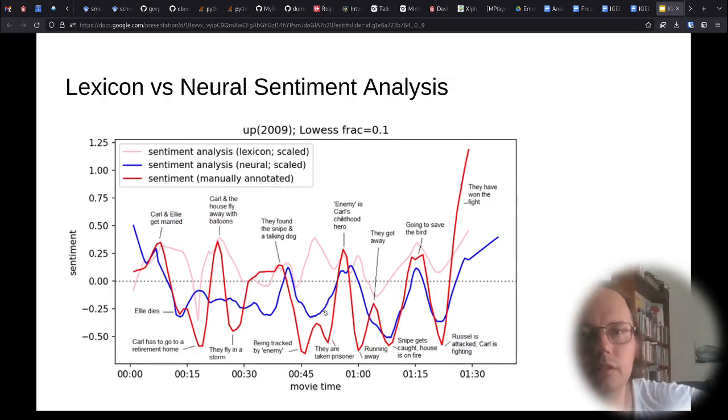Then, we also wanted to see if the neural sentiment analysis based on large language models provides a much more accurate sentiment arc compared to the lexicon-based sentiment analysis. And you can see that here, the blue curve is based on neural sentiment analysis, whereas the light red curve is based on lexicon-based sentiment analysis. And we can see that the blue curve picks up on much more of the valleys and negativity in the first half of the movie, and also matches the curve on the second half of the movie much more closely. So again, for the rest of the analysis in this presentation, I will use the neural-based sentiment analysis.